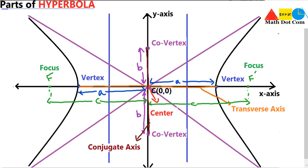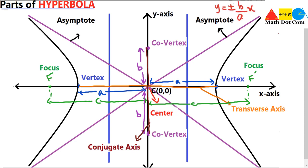The next part of the hyperbola we are going to see are the asymptotes. These two oblique lines in the diagram are basically the asymptotes of the hyperbola. An asymptote is basically a line that a curve approaches as it heads towards infinity. We have two asymptotes, and they have an equation. To find the asymptotes of a hyperbola in standard form, the equation is y = ±(b/a)x when the transverse axis is along the x-axis.